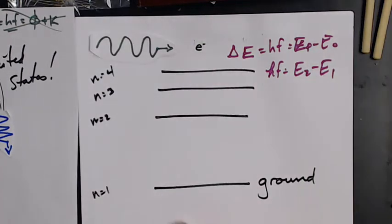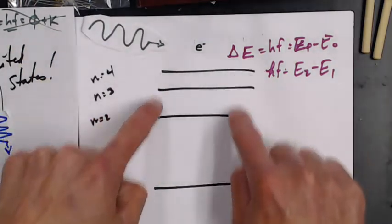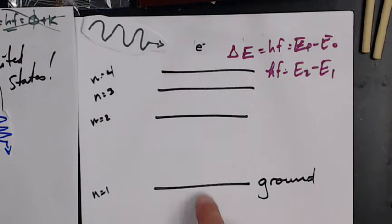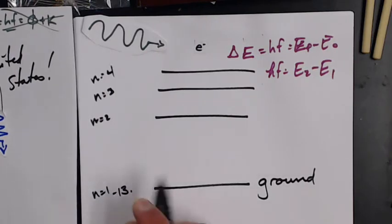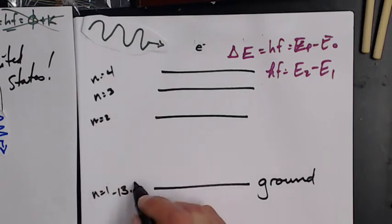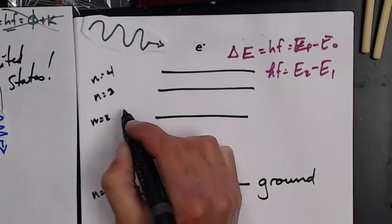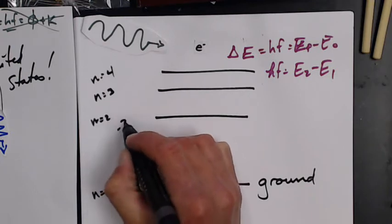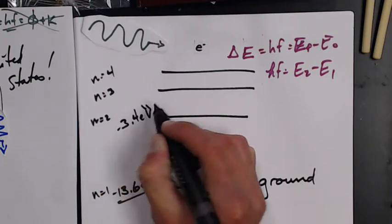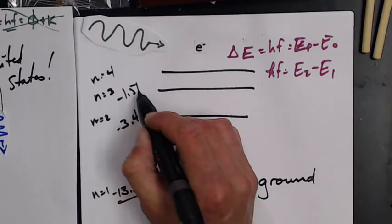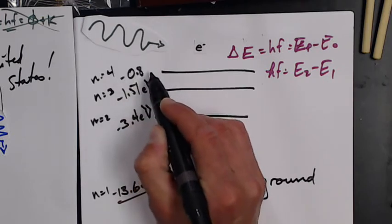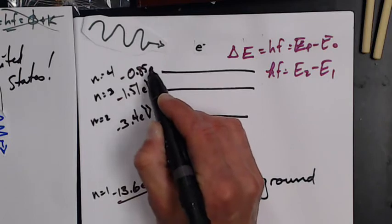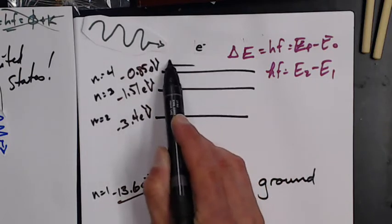All of these energies are negative. For hydrogen, this energy is negative 13.6 electron volts. The energy associated with this one is negative 13.1 electron volts, negative 3.4 electron volts, negative 1.51 electron volts, negative 0.85 electron volts. These keep going and get closer and closer together.